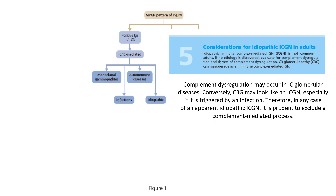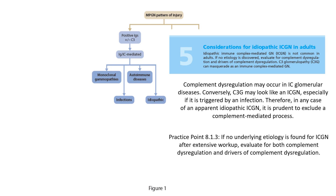Complement dysregulation may occur in immune complex glomerular disease. Conversely, C3 glomerulopathy may look like an immune complex-mediated GN, especially if triggered by infection, and can present with an immune complex-mediated shape of MPGN. If no cause is found after exclusion of complement dysregulation and its drivers, the case is considered idiopathic.